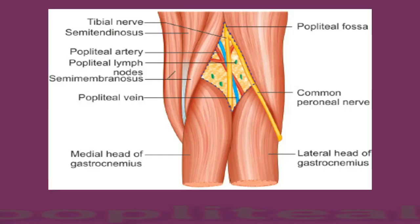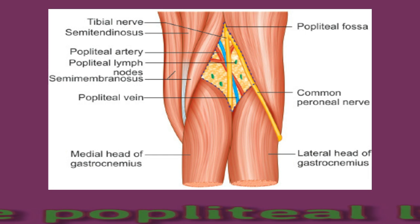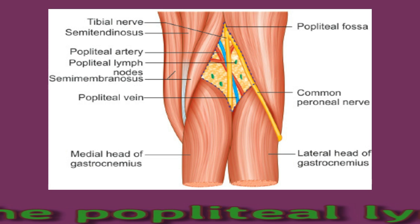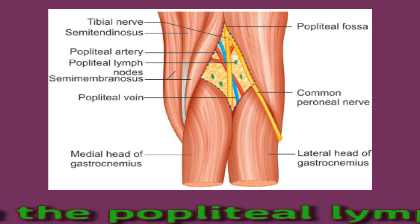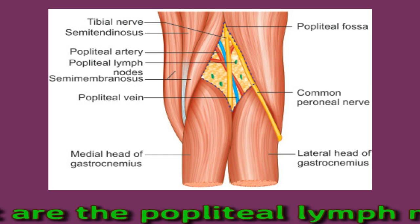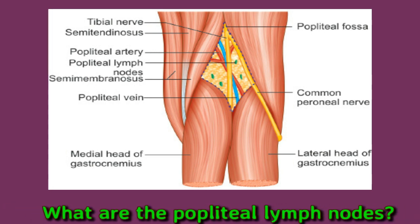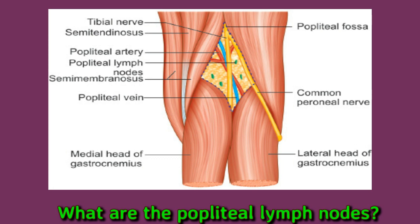What are the popliteal lymph nodes? Lymph nodes are part of the lymphatic system, which serves many important functions — for instance, it moves immune cells around the body and manages fluid buildup between cells. Within the lymphatic system, lymph nodes help to filter bodily fluids by connecting to lymphatic vessels which feed fluids into them. The filtering process involves removing harmful cells, molecules, or pathogens. The popliteal lymph nodes specifically filter fluids from deep structures within the leg and foot.